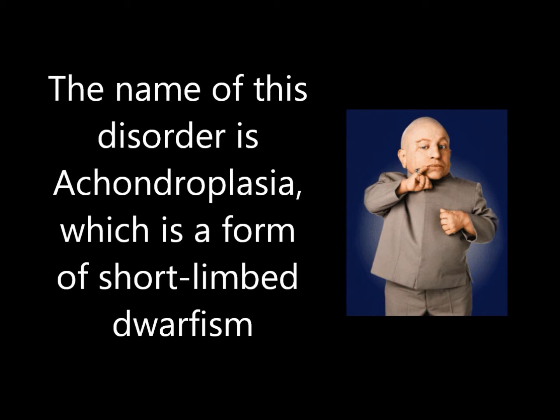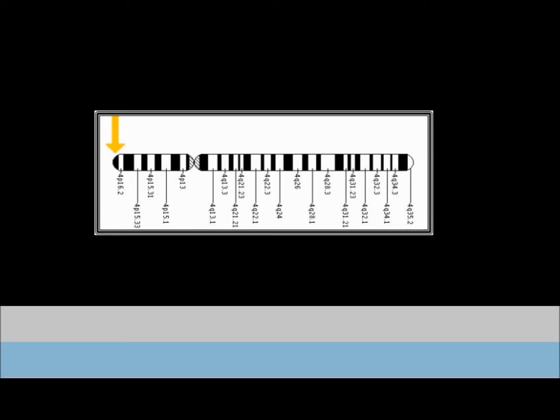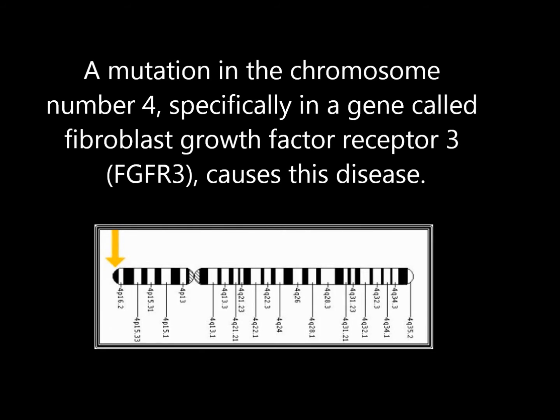Today I'm going to talk about this disorder called achondroplasia, which is a form of short limb dwarfism. A mutation in chromosome number four, specifically in a gene called fibroblast growth factor receptor 3, also known as FGFR3, causes this disease.